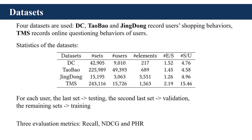We conduct experiments on four datasets. The first three datasets are obtained from shopping scenarios, and the last one records online questions of users. For data partitioning, we use the last set, the second last set, and the remaining sets of each user for testing, validation, and training respectively. The three evaluation metrics including Recall, NDCG, and PHR are used.